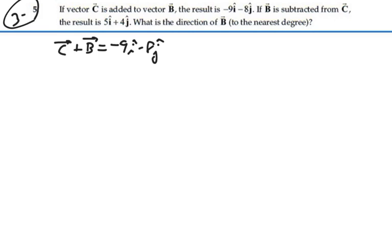the result is 5i + 4j. What is the direction of B to the nearest degree?